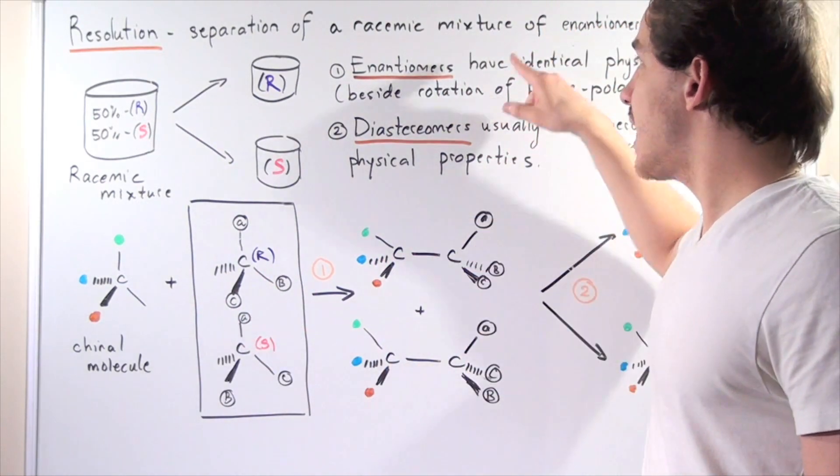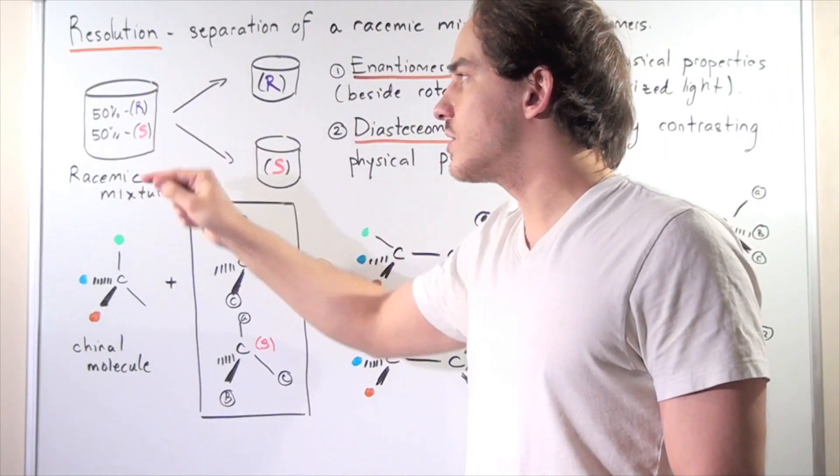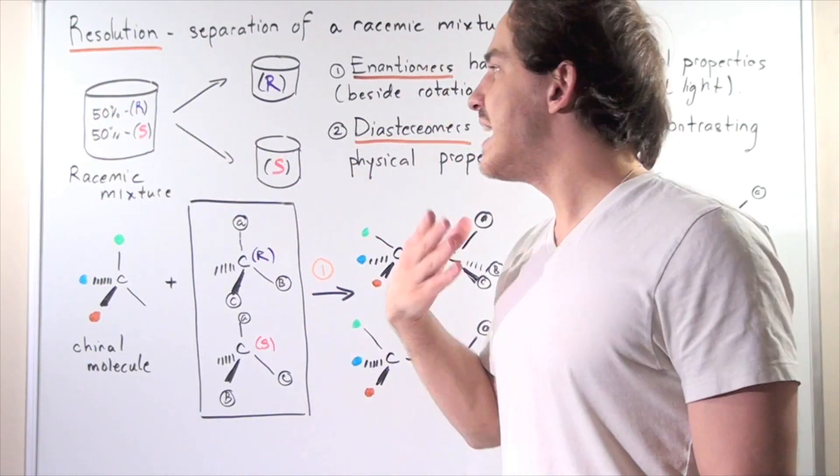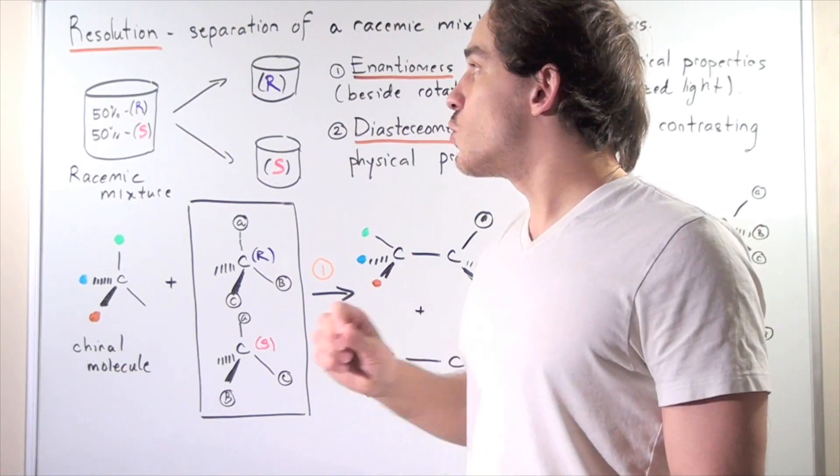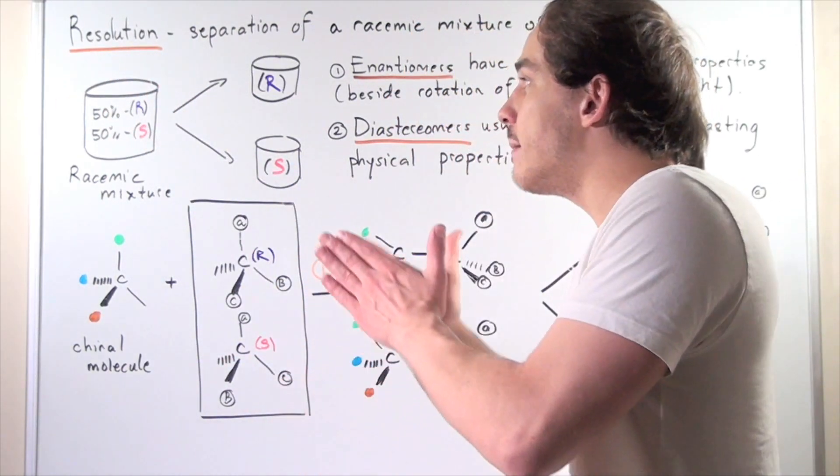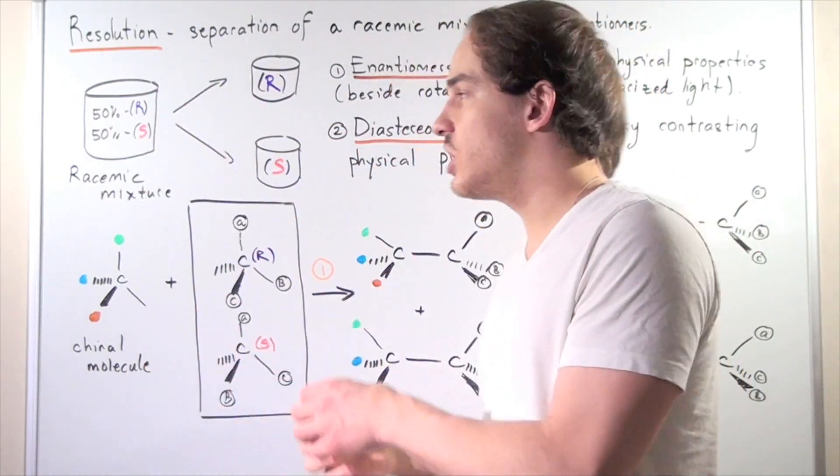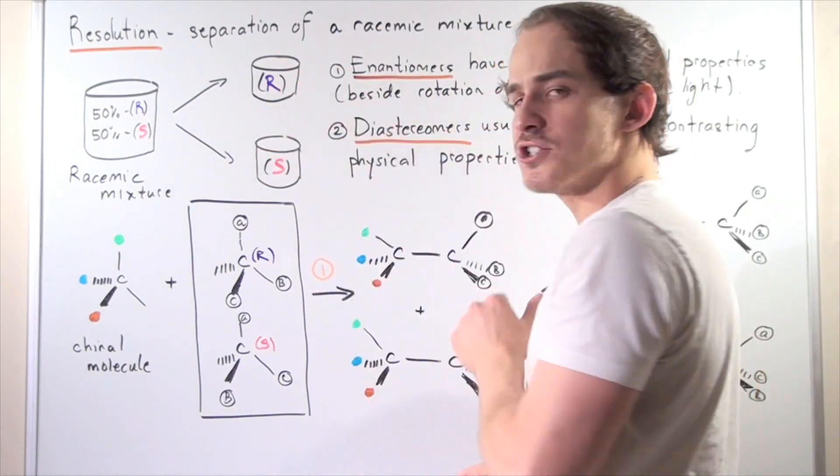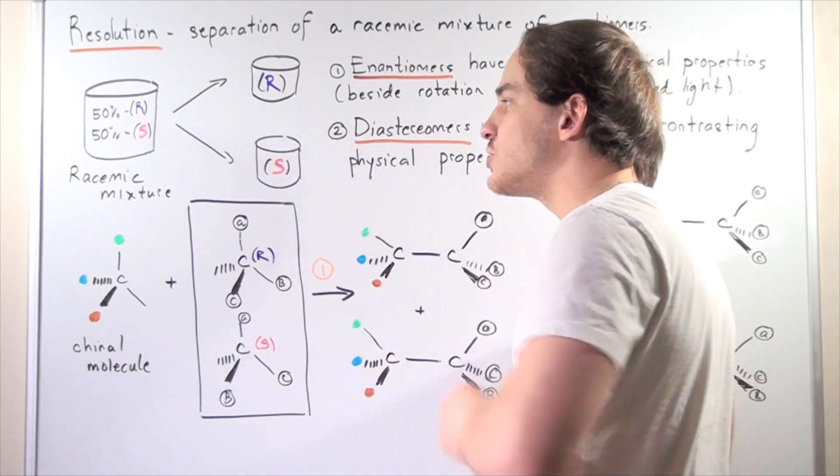Let's suppose I take my racemic mixture and place it inside a container. This container contains 50% R enantiomer and 50% of its mirror image S enantiomer. What resolution allows us to do is separate the R from the S. After resolution, we're going to have a container that strictly has R enantiomer and a second container that only has the S enantiomer.